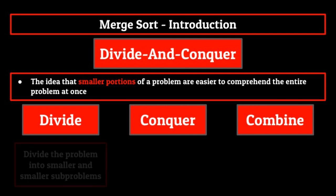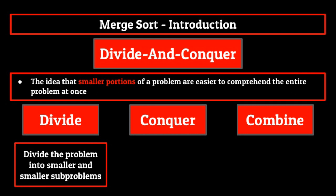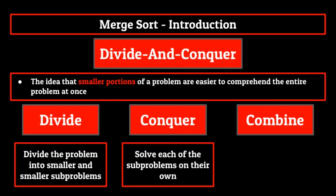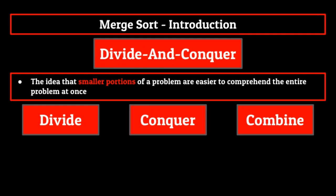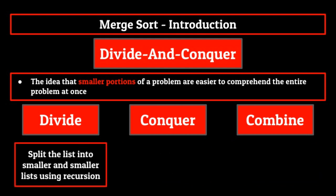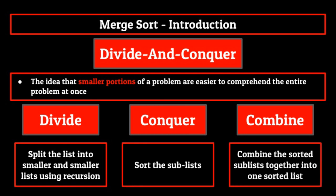During the divide stage, we divide the problem into smaller and smaller sub-problems. This is where recursion comes into play. We'll be using recursion to get the list into the smallest sub-lists possible. Then during the conquer stage, once we have the problem broken down into manageable sub-problems, we can solve each of the sub-problems on their own. Finally, in the combine stage, we combine all of the now-solved sub-problems into one large solution and return it back to the user. So in terms of a sorting algorithm, a divide and conquer methodology would split the list into smaller and smaller sub-lists using recursion, sort those sub-lists, and then combine the sorted sub-lists together into a single sorted list. What we've just described are the basics of a merge sort.